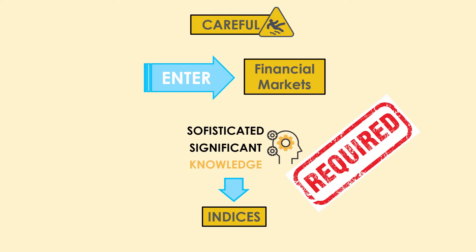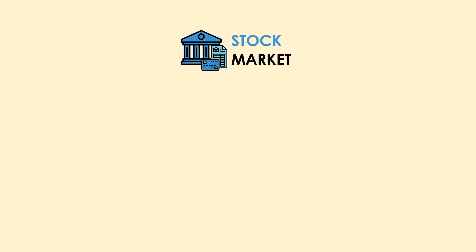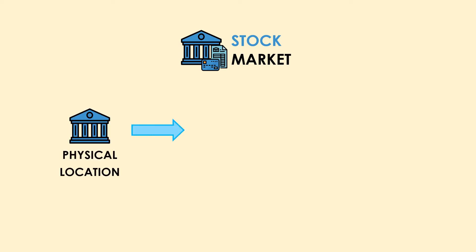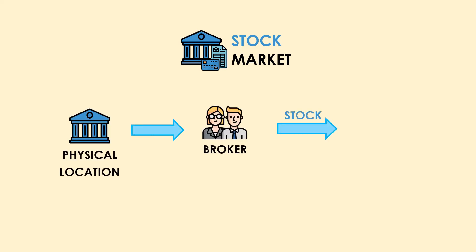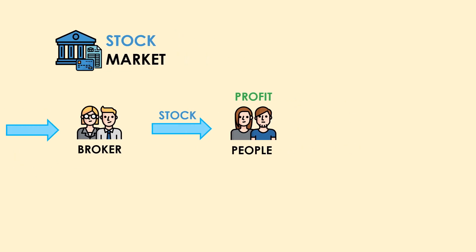For now, let's focus on what financial markets are out there. Financial markets are easy to identify — they are named after the instruments they trade in. The stock market has a physical location containing various brokers. General people strike deals with brokers to buy a stock, which is essentially a very small amount of ownership of a company. When the company does well in the market, people make a profit.